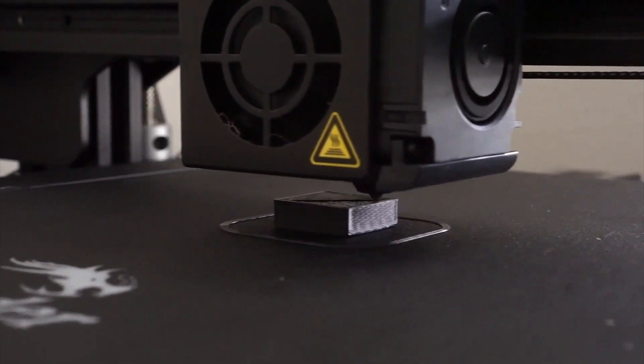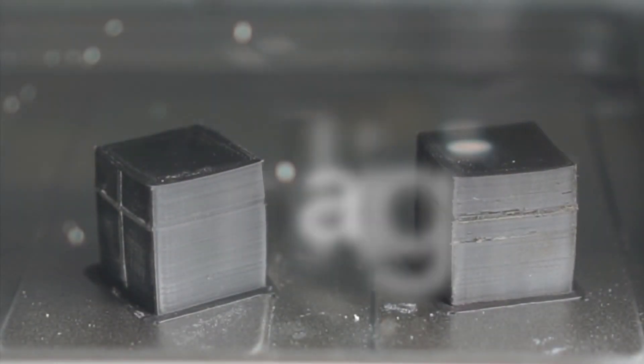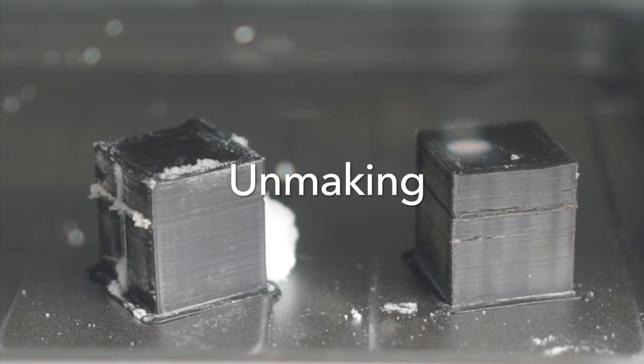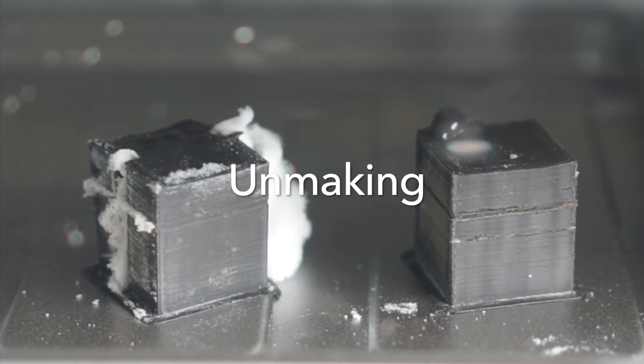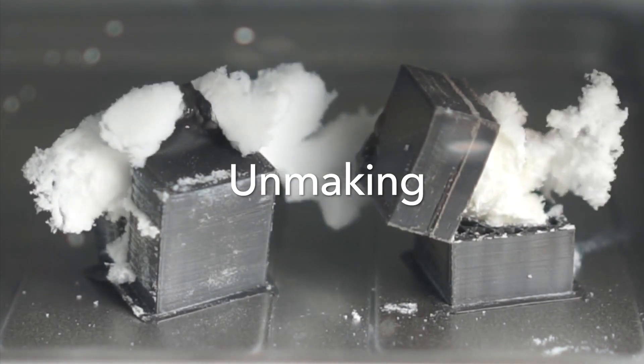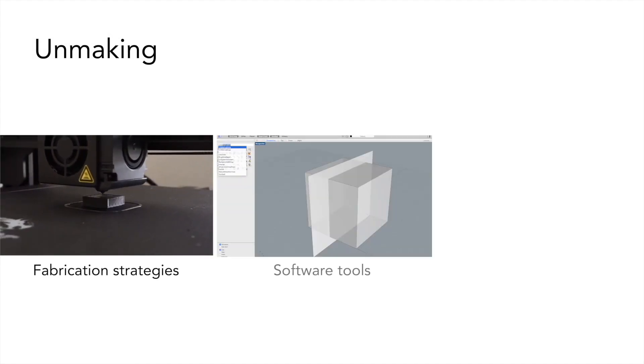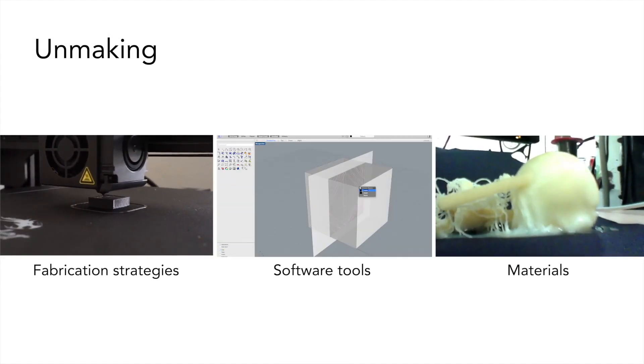We propose that unmaking—the processes of destruction and decay that occur after making—can and should be equally considered as part of the creative making process. For this to happen, we will require new fabrication strategies, software design tools and materials to allow practitioners to embrace unmaking in their designs. We need to enable a new set of operations.